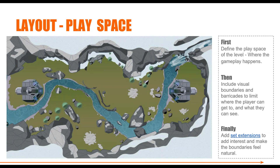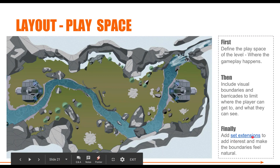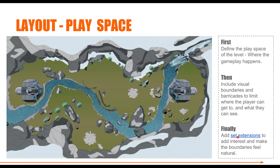Set extensions are things that the player can see but not necessarily get to. Say we have a scenario in a subway station on the train tracks — part of the tracks are broken off with debris in front of us. We can see beyond the barricade but we can't get over there. Those are set extensions that make the environment feel larger than it actually is. This links to a video about green screens and blue screens in film, showing where the overall shot is taken and everything added on after the fact — you can apply that idea to games, where the gameplay area is surrounded by set extensions the player can't physically walk to.